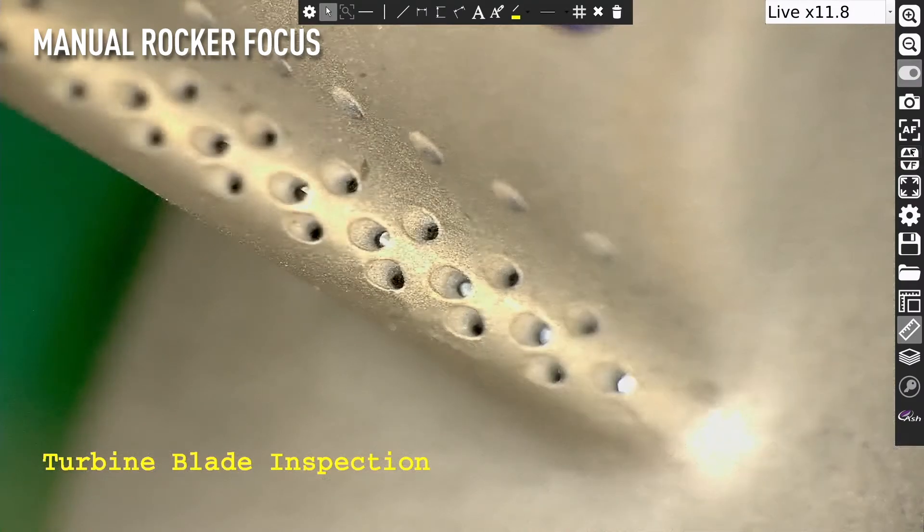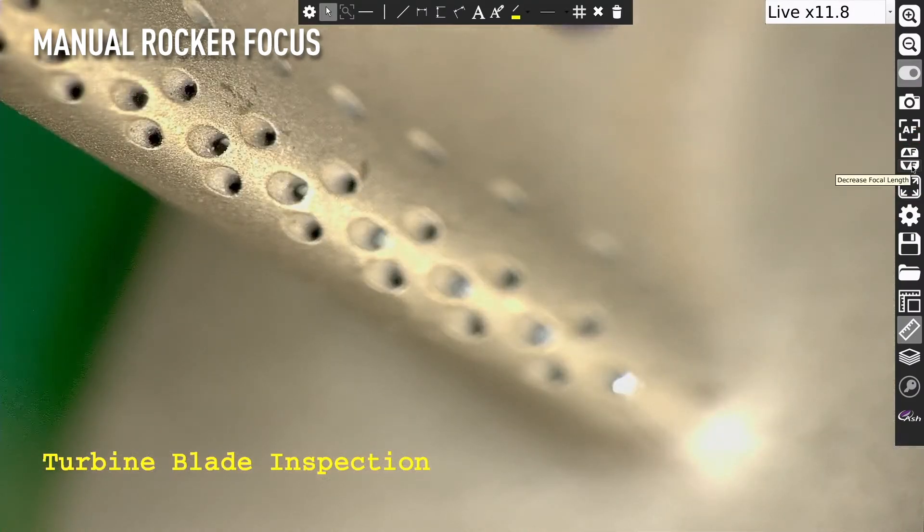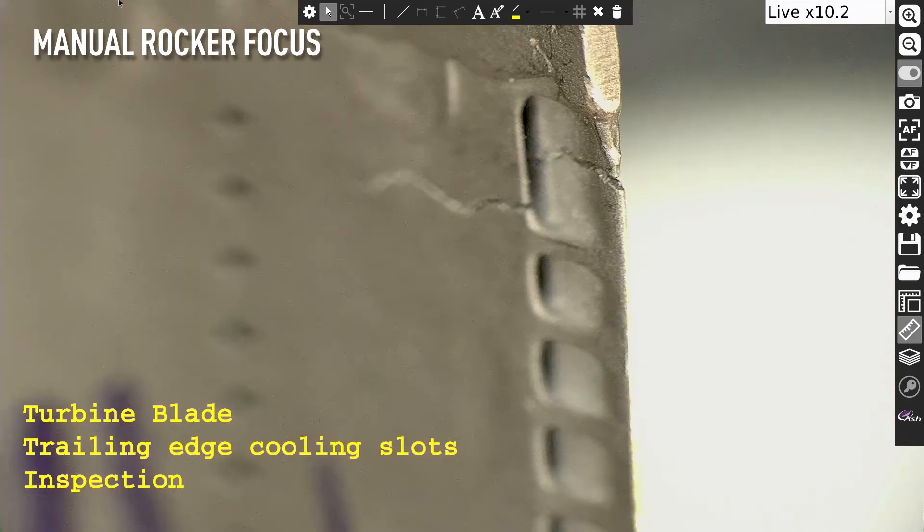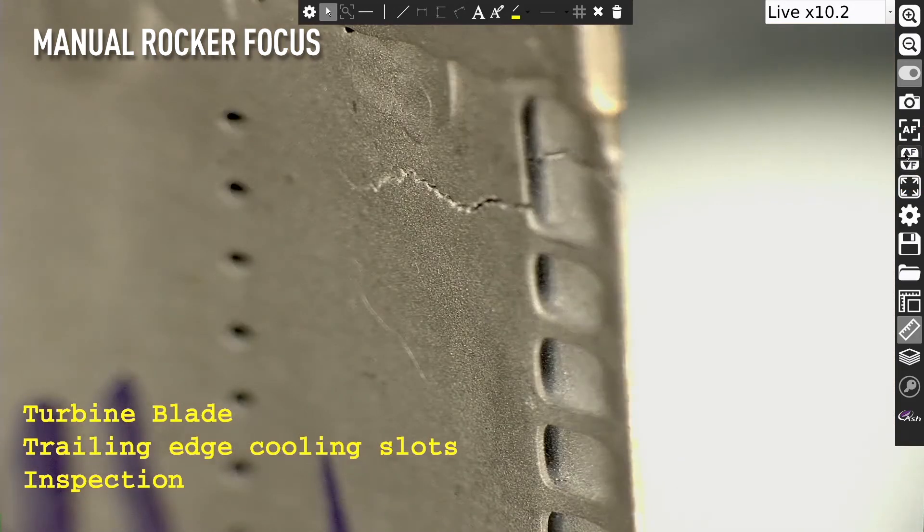Using the new manual rocker focus feature, quickly adjust the focus of the camera on your part, by selecting the near and far focus, utilizing the rocker icon.